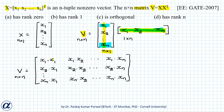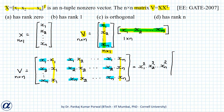From the first column I can take x1 common, from the second column x2 common, and so on — from the nth column xn common. Similarly from the first row I can take x1 common, from the second row x2 common, and from the nth row xn common. This gives a factor of x1²·x2²·...·xn², and all remaining elements in the matrix become 1.